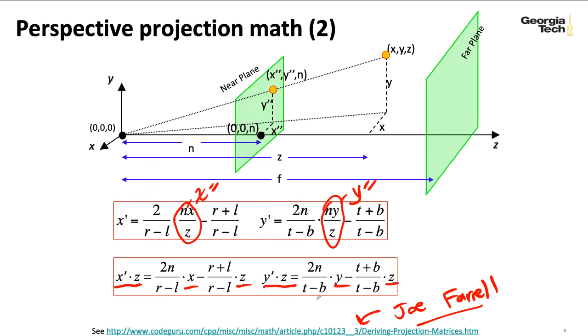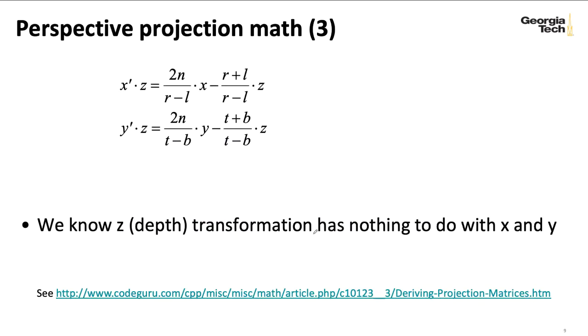And I can express this as a matrix computation. Now we'll need to think a bit about what we want to do with Z prime. So we figured out how to transform X and Y. We do need to do something with Z because that's going to have some depth information in it. We're going to need to figure out obscuration.